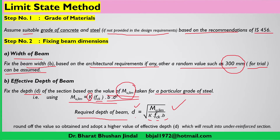Whatever value you get from this formula — say 415 or 412 — round it off to a higher value. If you get 416, you can go for 450 or 430; that is your first trial. We adopt a higher value of effective depth so that we get an under-reinforced section, as the code restricts beam sections to be under-reinforced. Increasing depth increases the moment of resistance, making it a safe trial.